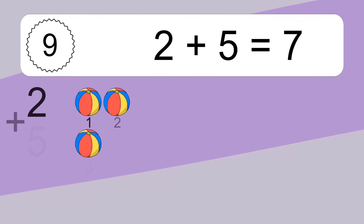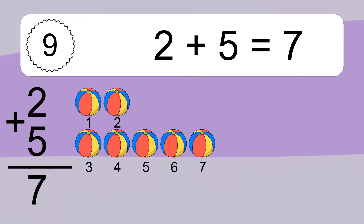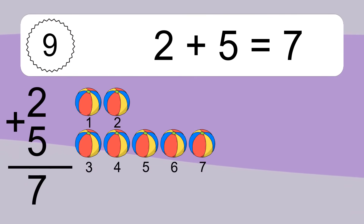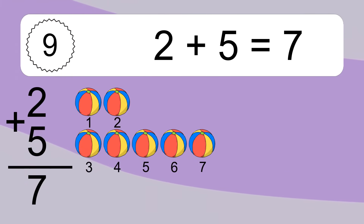2 plus 5 equals what? 2 plus 5 equals 7. Let's count it. 1, 2, 3, 4, 5, 6, 7.